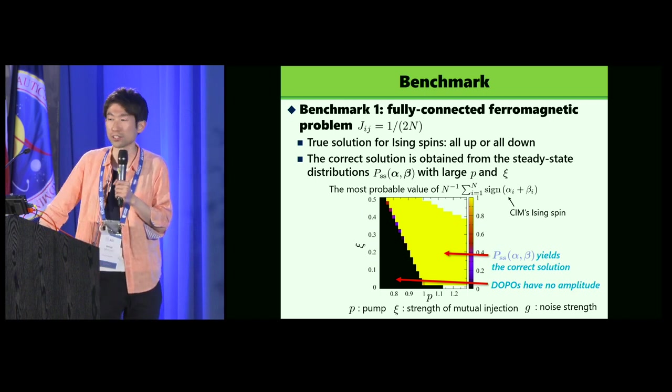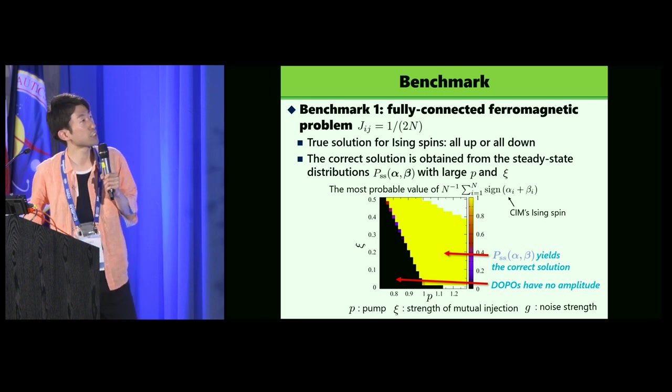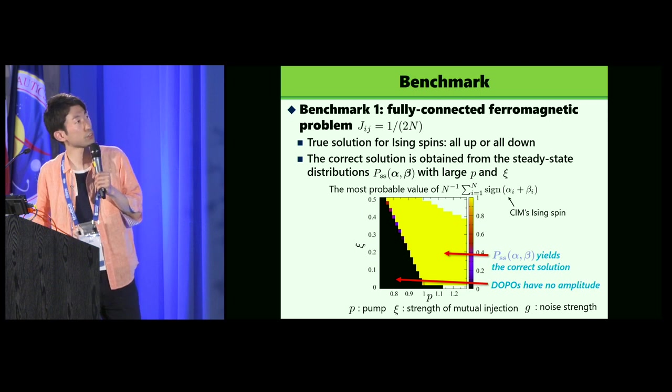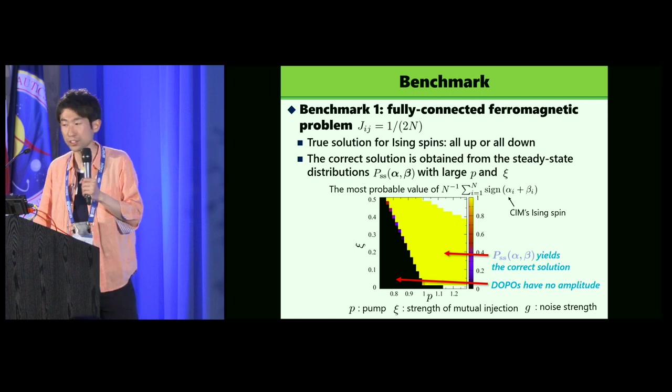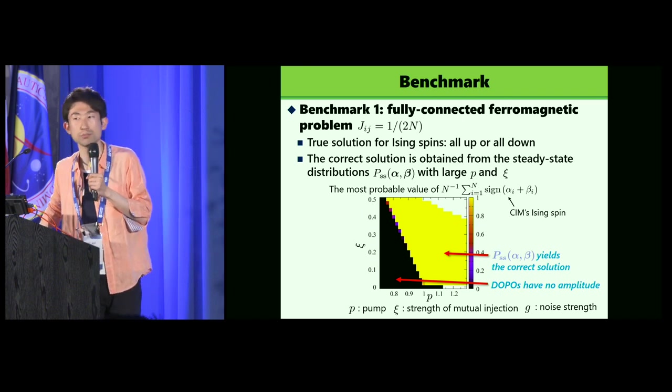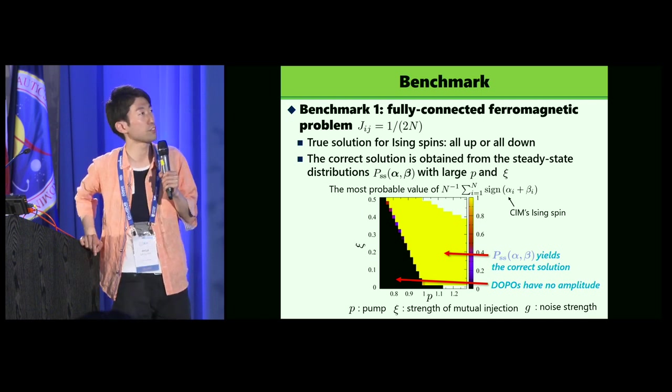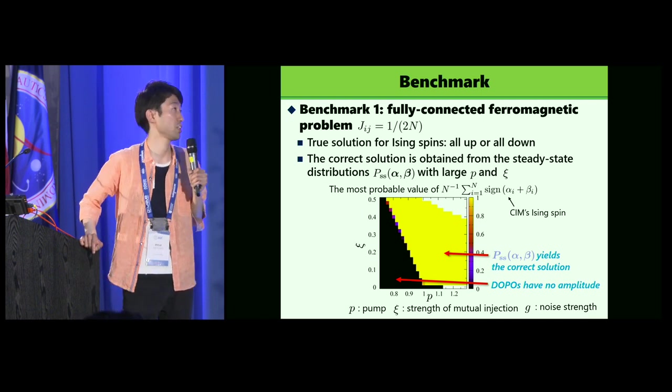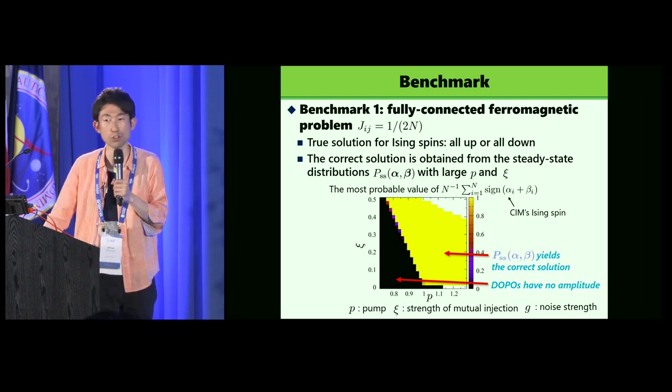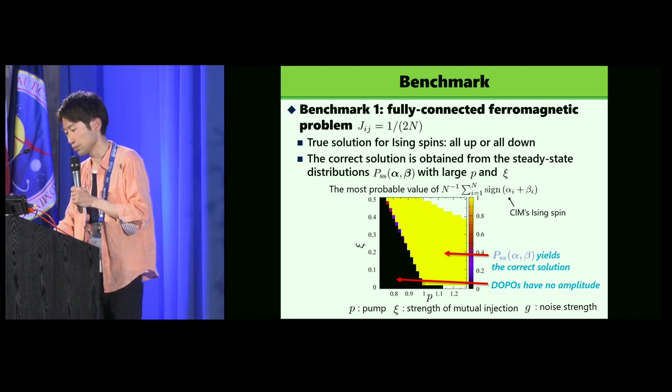This average is something like magnetization obtained from the CIM. We can calculate the most probable value of that by using the method of statistical mechanics. Then the obtained result is shown in this figure in the P and C plane. In the black region, DOPOs have no amplitude, so we have no solution. But with larger P and C, DOPOs have amplitude and obtained configuration shows all up or all down. So steady-state distribution gives the correct solutions in this region.